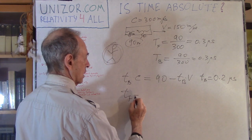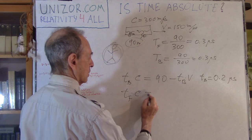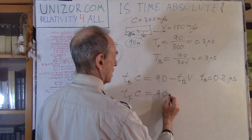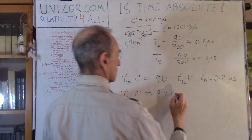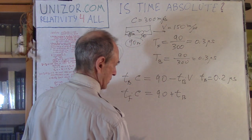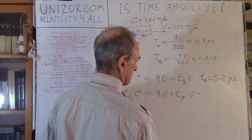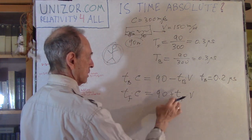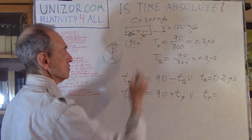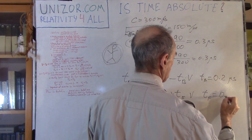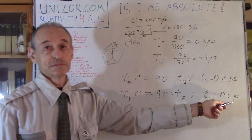Now T front. That's the time for light to reach the front wall. It's supposed to cover 90 meters plus the distance the front wall will move away from the light. And so that would be 90 divided by C minus V. C minus V is 150. So 90 divided by 150 is 0.6 microsecond. Well, that's the difference.